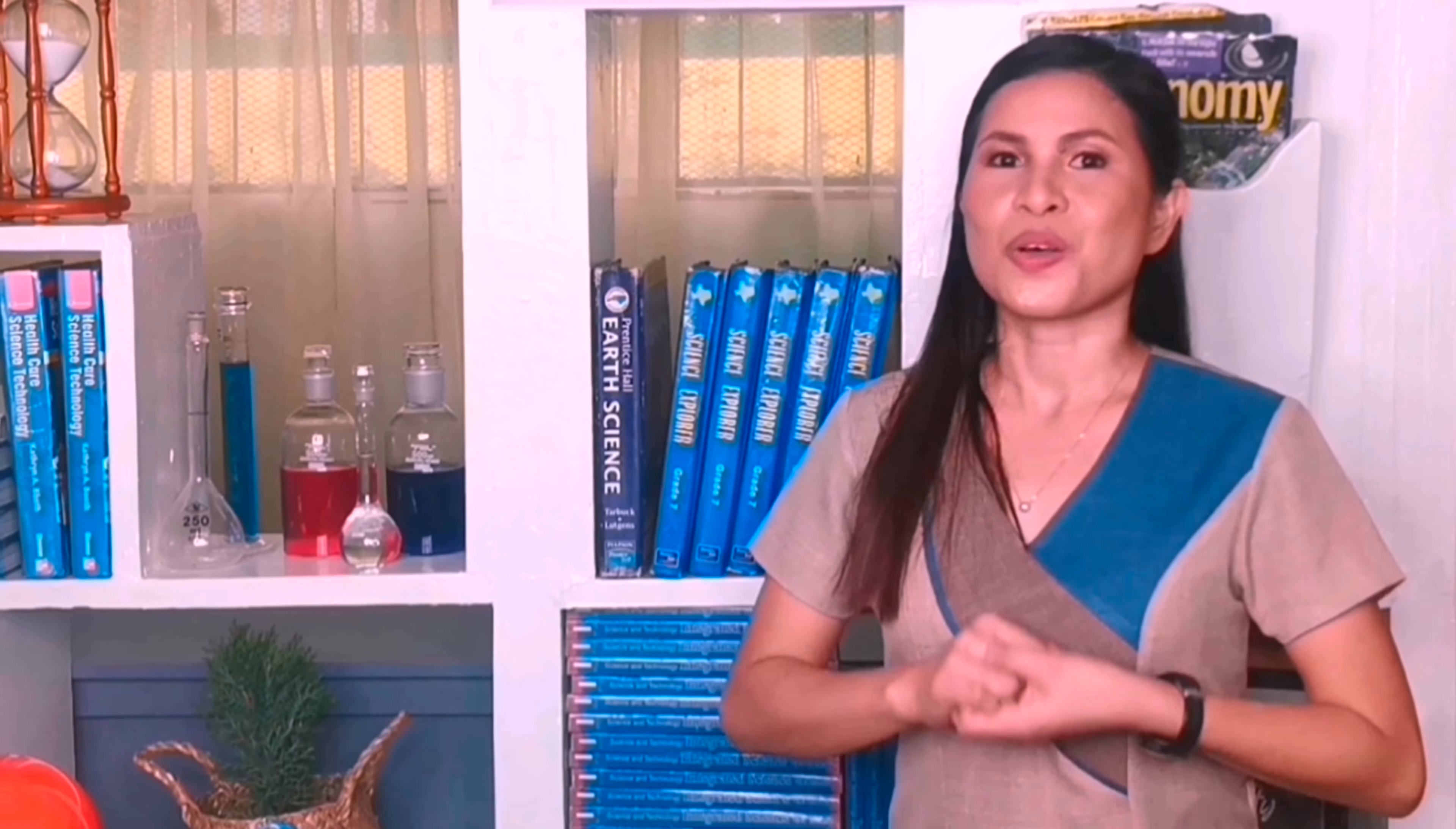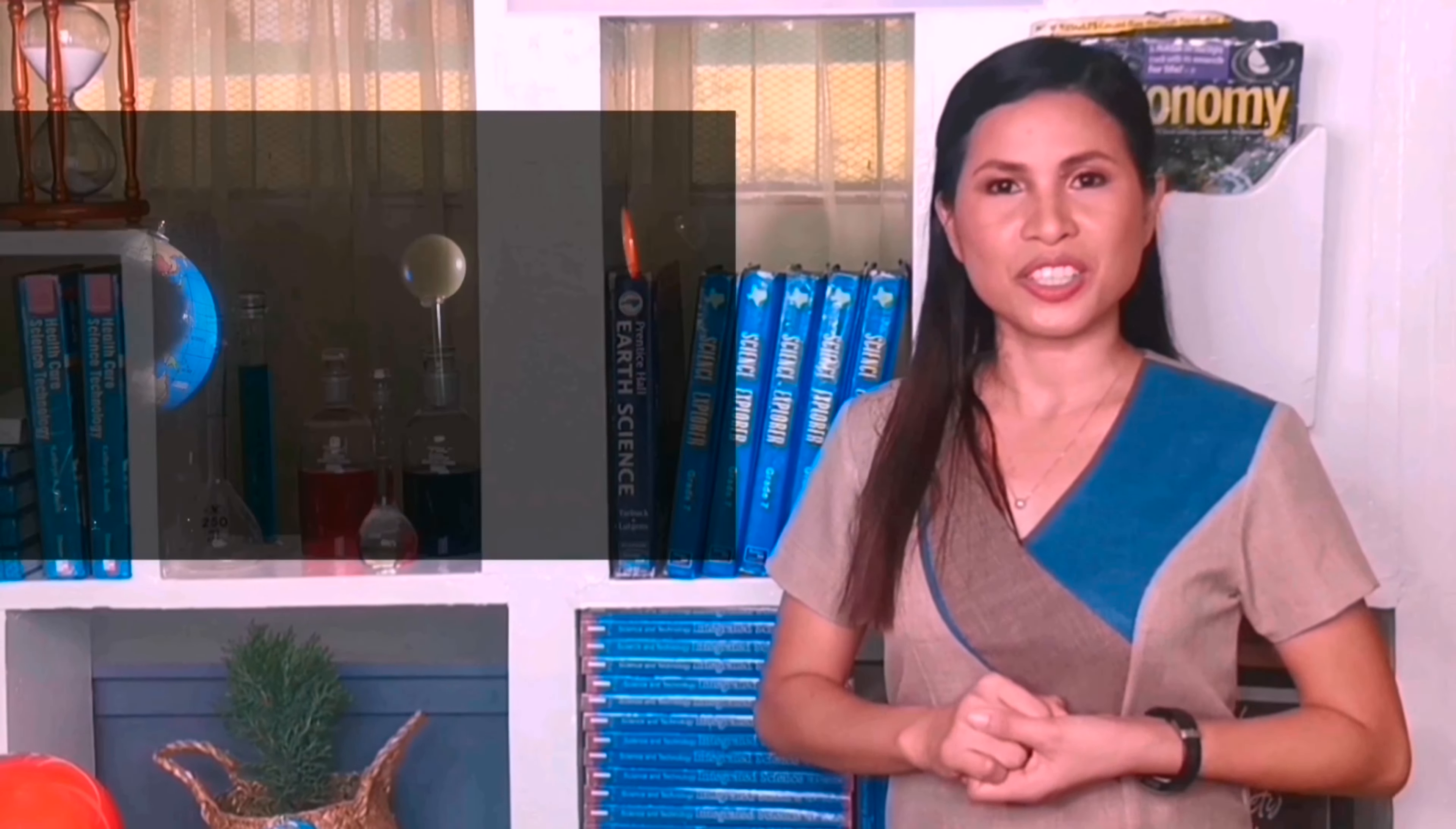This occurs 2 to 5 times a year. When Earth enters the moon's shadow, we see a solar eclipse. Don't look directly at a solar eclipse. Even though it appears darker, the harmful rays of the sun can still damage your eyes.